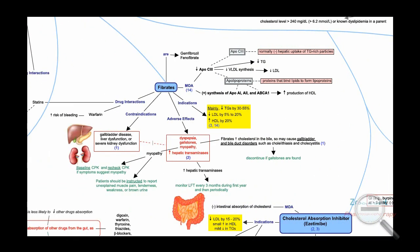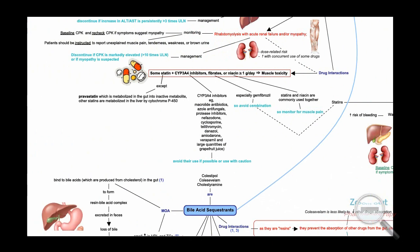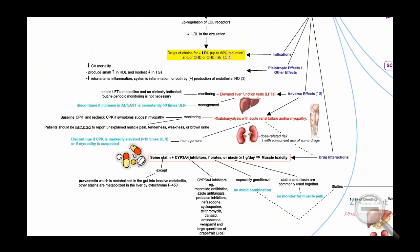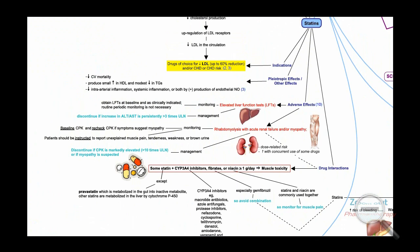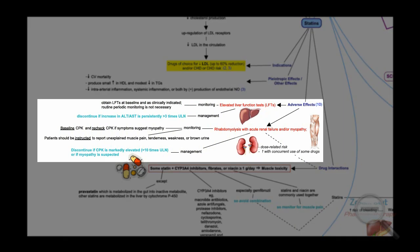Each drug or drug class has its own map covering mechanism of action, indications, adverse effects, drug interactions, contraindications, and precautions. For certain drugs, the map also shows how to manage an adverse effect or drug interaction. For example, adverse effects of statins include elevated liver function tests. As a monitoring parameter, liver function tests should be obtained at baseline and as clinically indicated. For management, statins should be discontinued if there is a persistent increase in ALT/AST ratio more than three times the upper limit of normal.